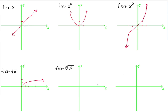Next is the cube root function. It takes every real number and pairs it up with its cube root. The cube root of 0 is 0, and the cube root of 1 is 1. But can we take cube roots of negative numbers? Yes — the cube root of negative 1 is negative 1, because negative 1 raised to the third power is negative 1. The cube root of 8 is 2, and the cube root of negative 8 is negative 2. You get this snake-like shape on its side. Domain is all real numbers, and the range is also all real numbers.